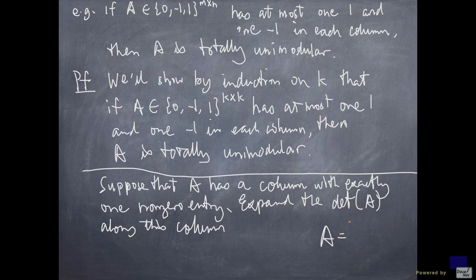Okay, so my matrix A looks like this and some column has 0s everywhere and then there's a non-zero and then everything has 0. And I expand along this column.